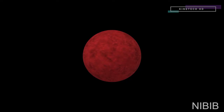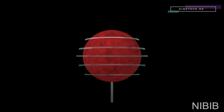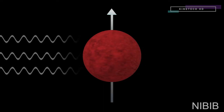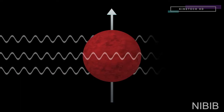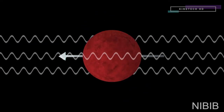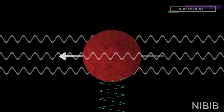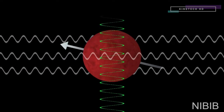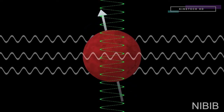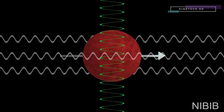MRIs use protons, which are abundant in the human body. All protons spin, creating a small magnetic charge. When a strong magnetic field is introduced, as is the case in an MRI machine, the protons align with that field. The MRI technician then introduces a radio frequency pulse that disrupts the proton and forces it either into a 90-degree or 180-degree realignment with the static magnetic field.